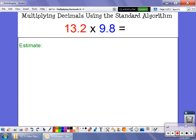So the first thing I want to do is look at these numbers. If I have 13.2, I'm going to estimate that that's close to 13. And if I have 9.8, I'm going to say that's close to 10. So in the end, when I do 13 times 10, I know my answer is going to be somewhere close to 130.